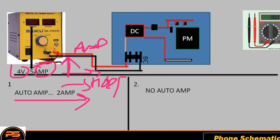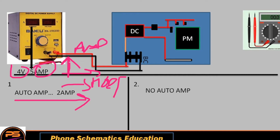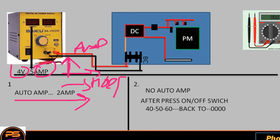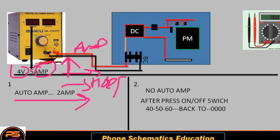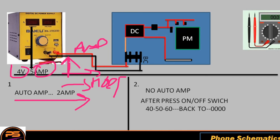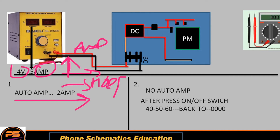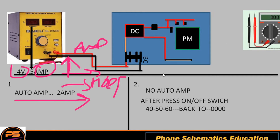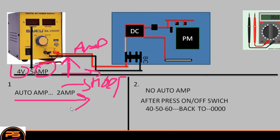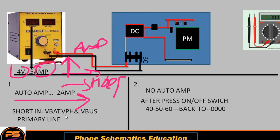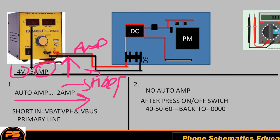In the second case, when you connect the port cable it takes no auto ampere, but when you press the on/off switch the ampere goes to 40–50–60 milliamps, then goes back to 0 after releasing the button. This means the phone is mostly in a half-short condition. In the first case it is a clear short — clear short means easy to remove, because shorting is in V-bat, VPH, or V-bus line. According to the DC machine, these are primary lines.